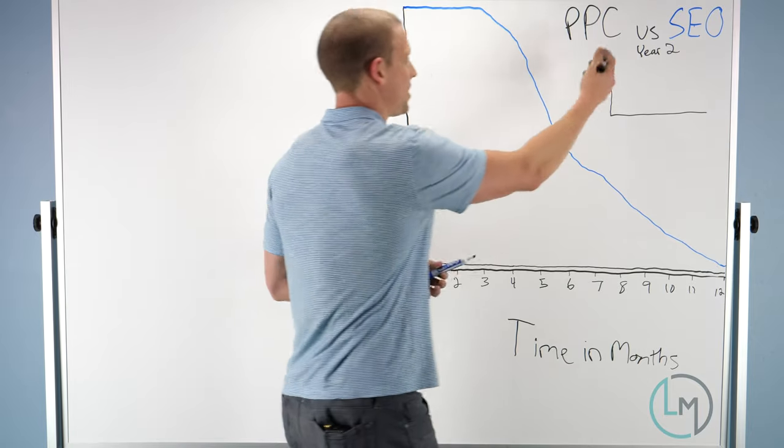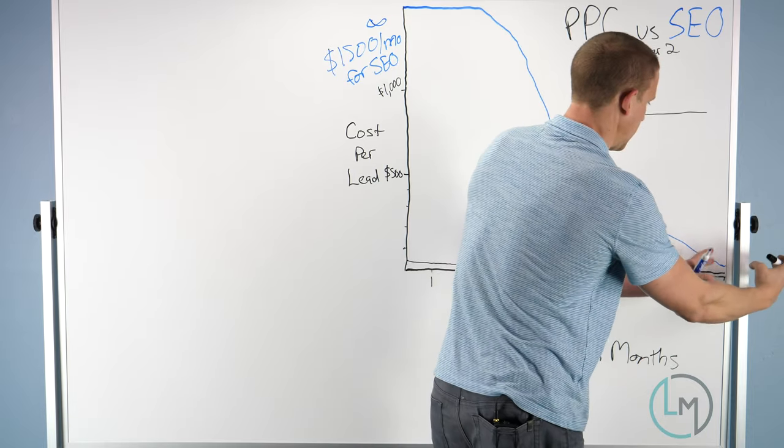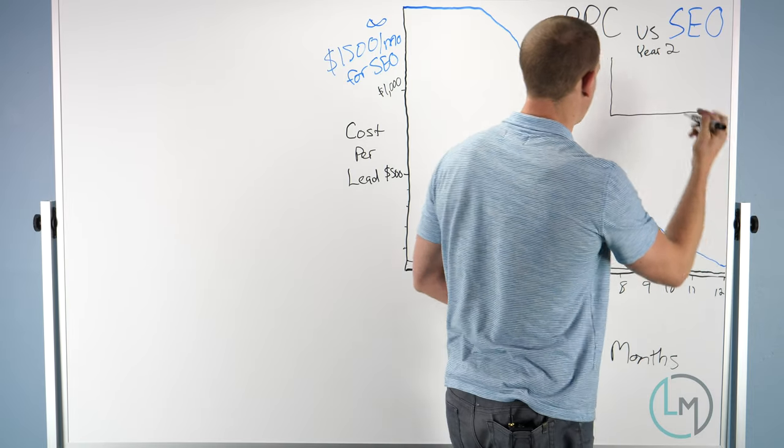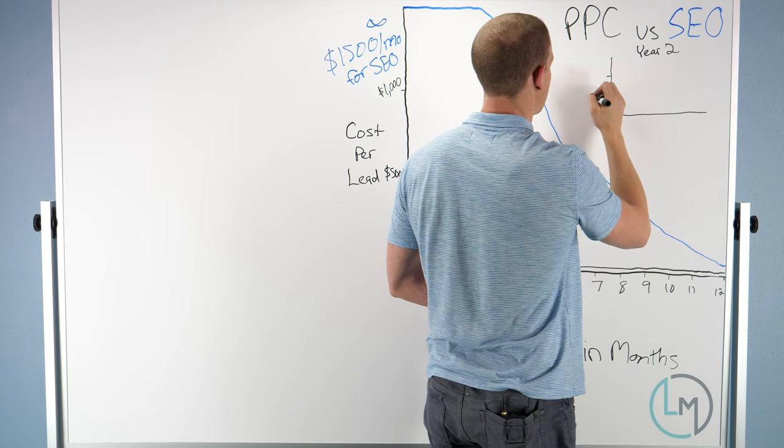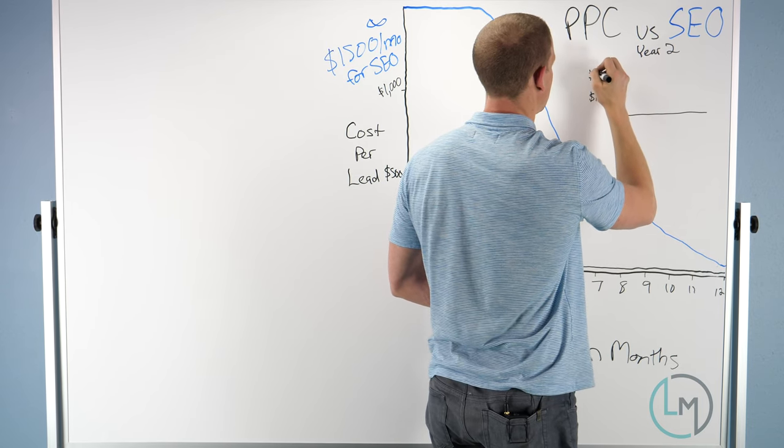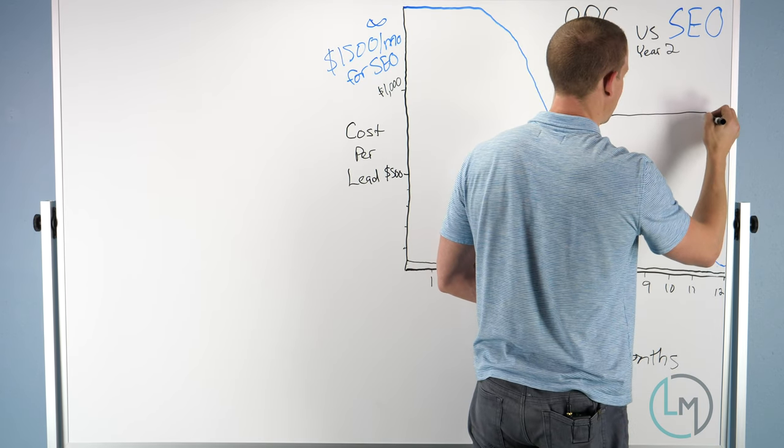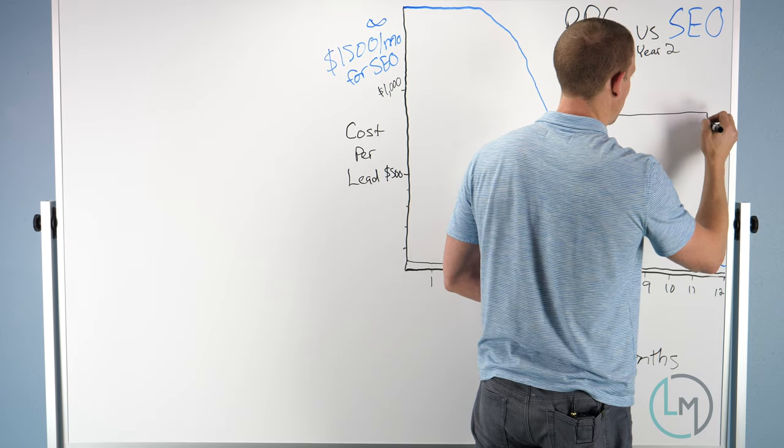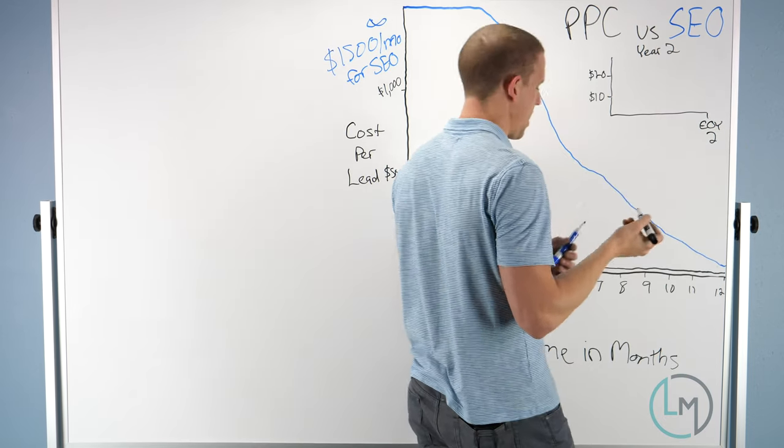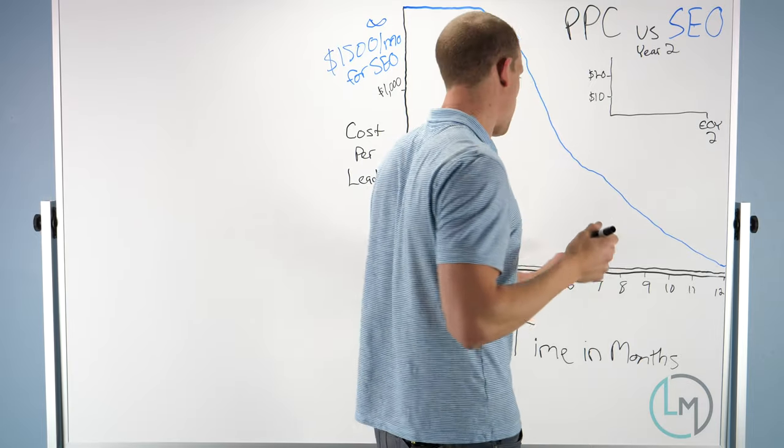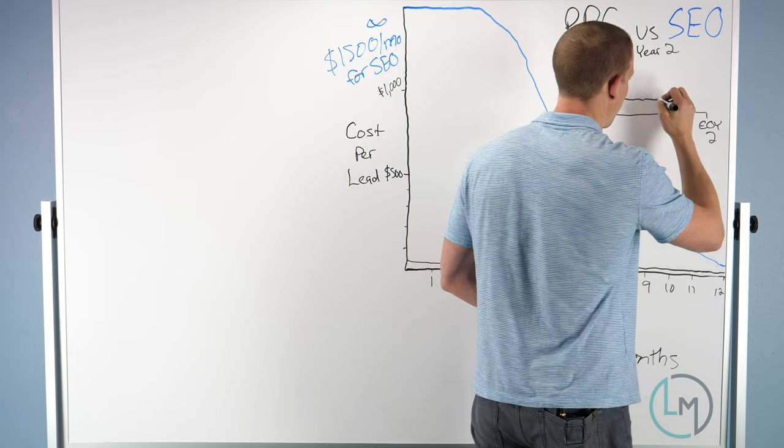I drew this little chart up here because I wanted to capture where we're at at the two-year mark. Let's pretend this line is $10 a lead, this is $20, and this is the end of year two. Our pay-per-click price is still about the same.